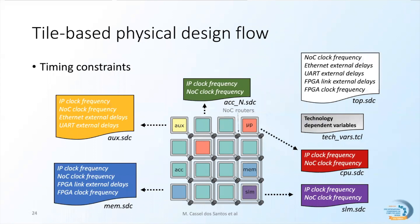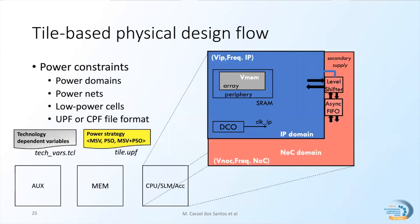The physical regularity of the tiles combined with the same logic interface and communication-synchronous GALS clock strategy significantly simplifies the timing constraint files. The designer only needs to specify the IP and NoC clock frequencies for each tile, which facilitates the addition of new accelerators. The auxiliary and memory tiles are the exception since they have external interfaces; their external delay values are shared with top-level constraints. Technology-dependent constraints do not change across the top-level and all tiles — they are specified with variables mapped to technology-specific parameters in a separate file. Similarly, power constraint specifications are simplified and reused across all tiles by only specifying which low-power technique is in place: multi-supply voltage, power source shutoff, or both.